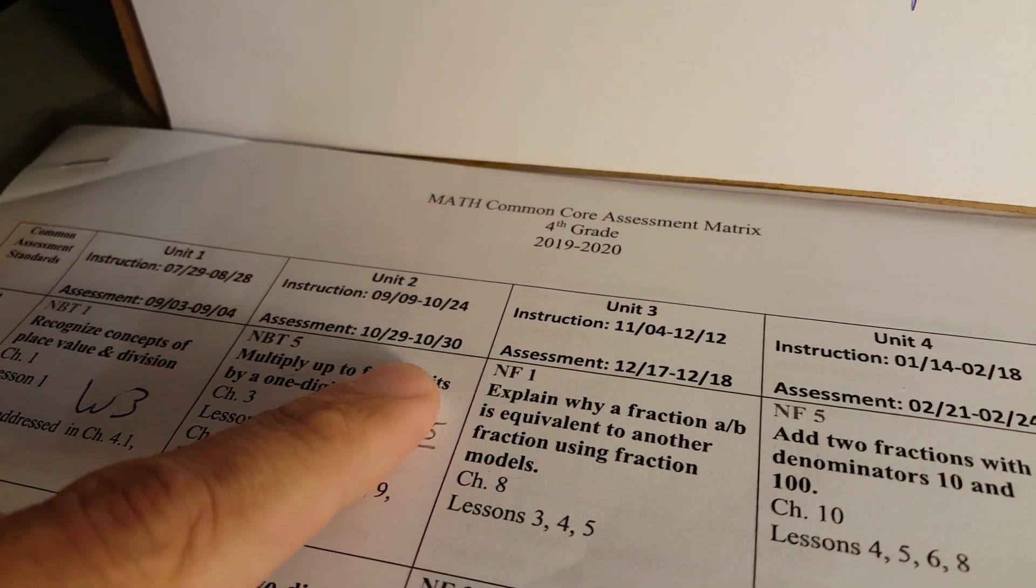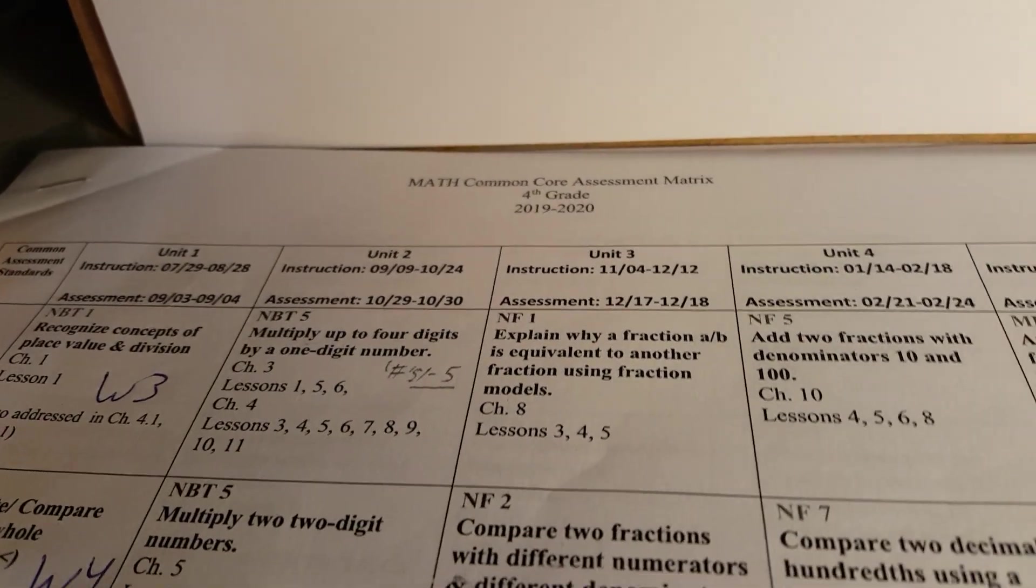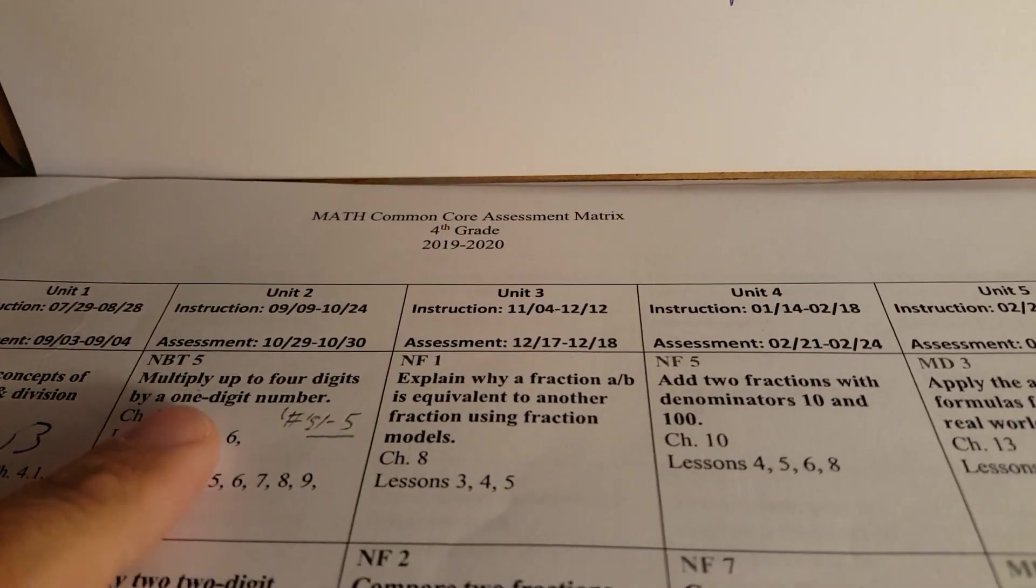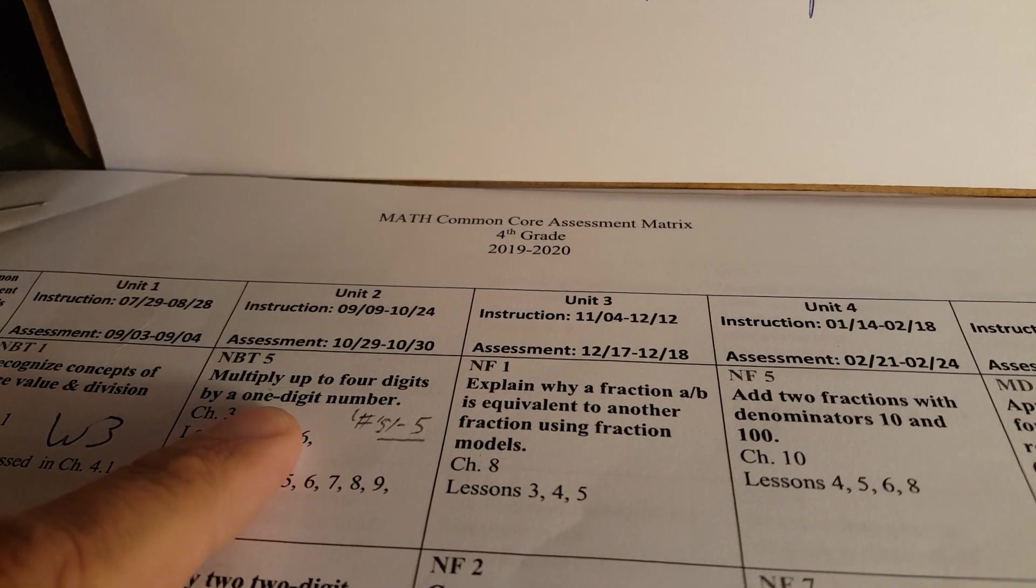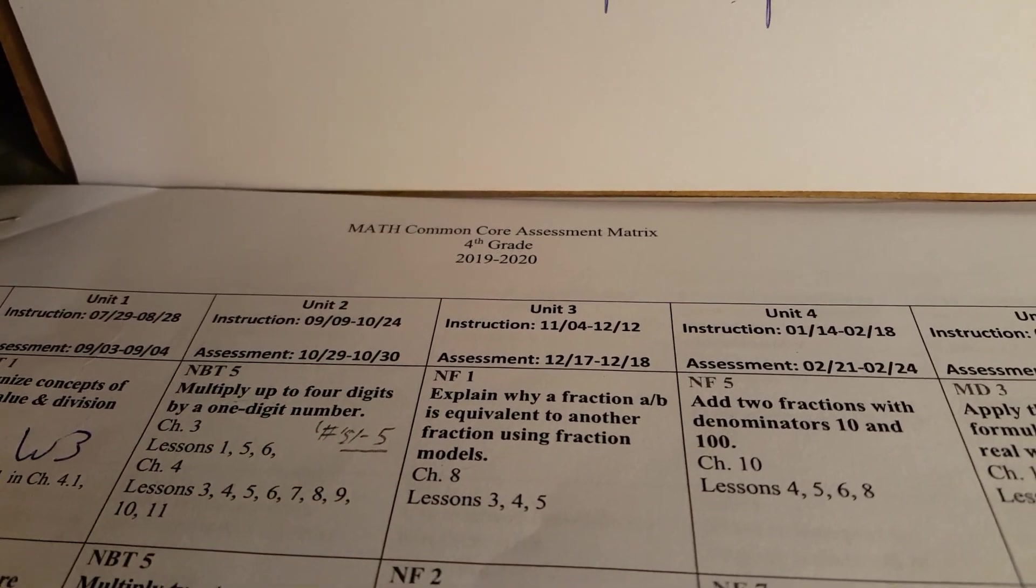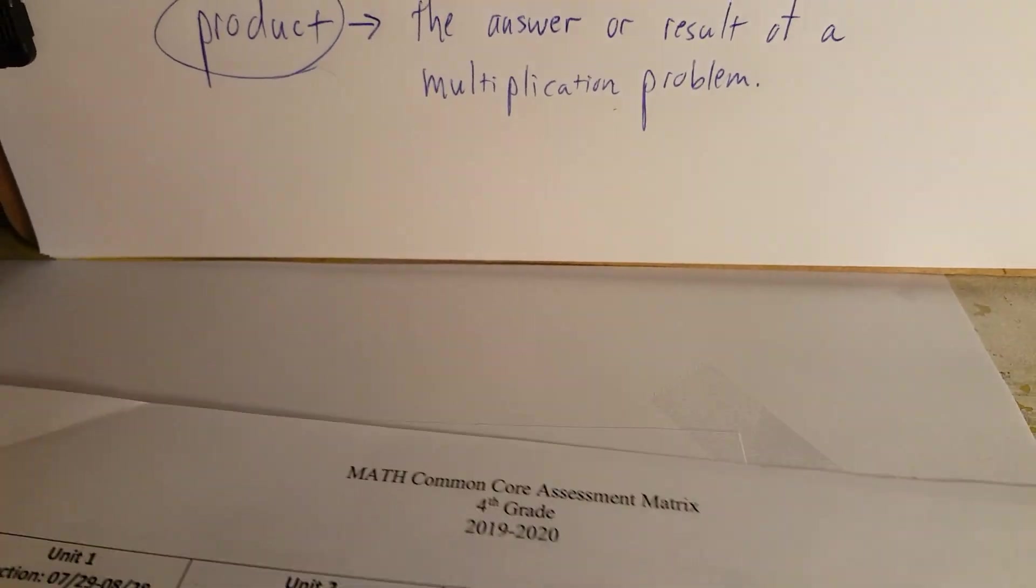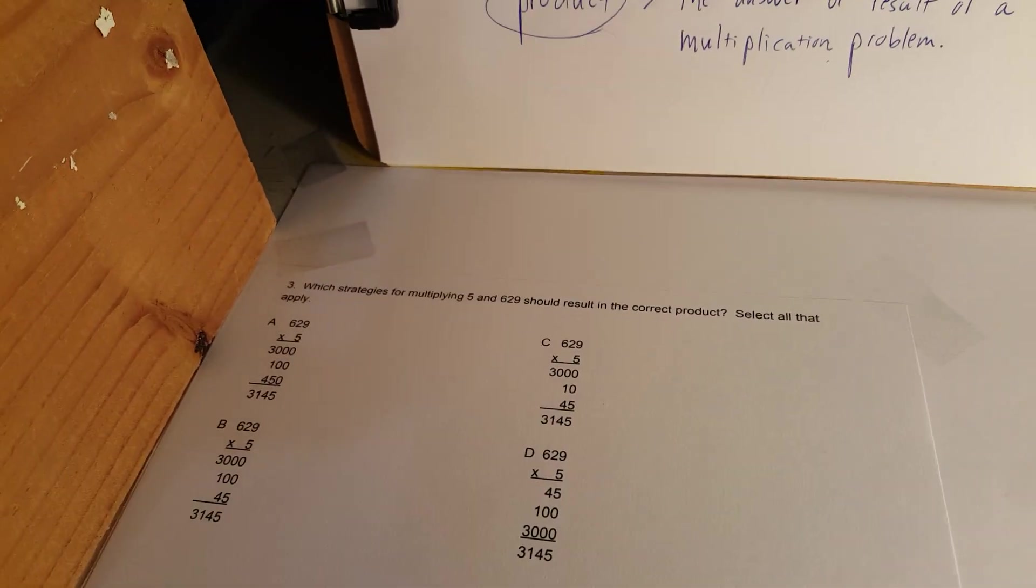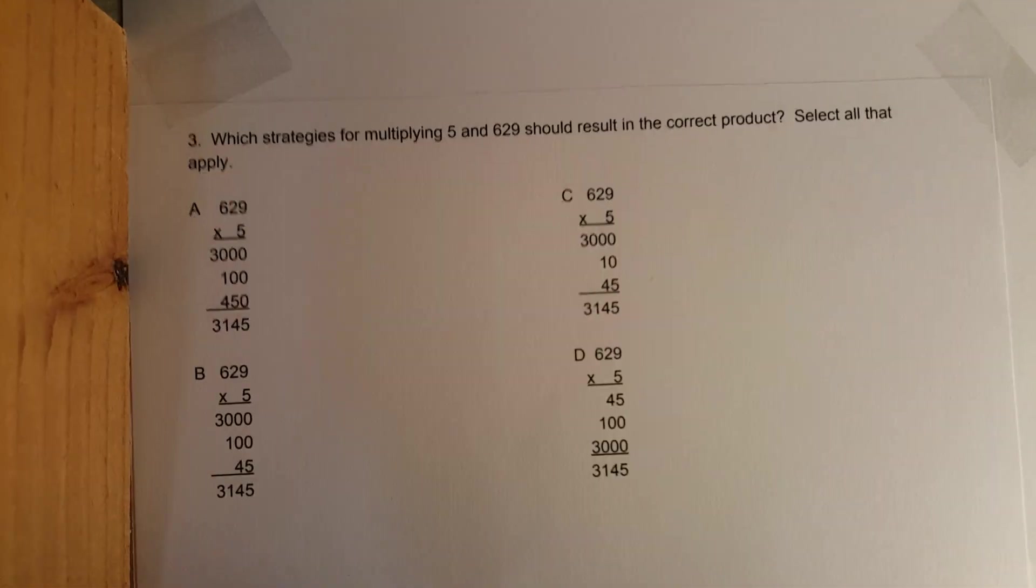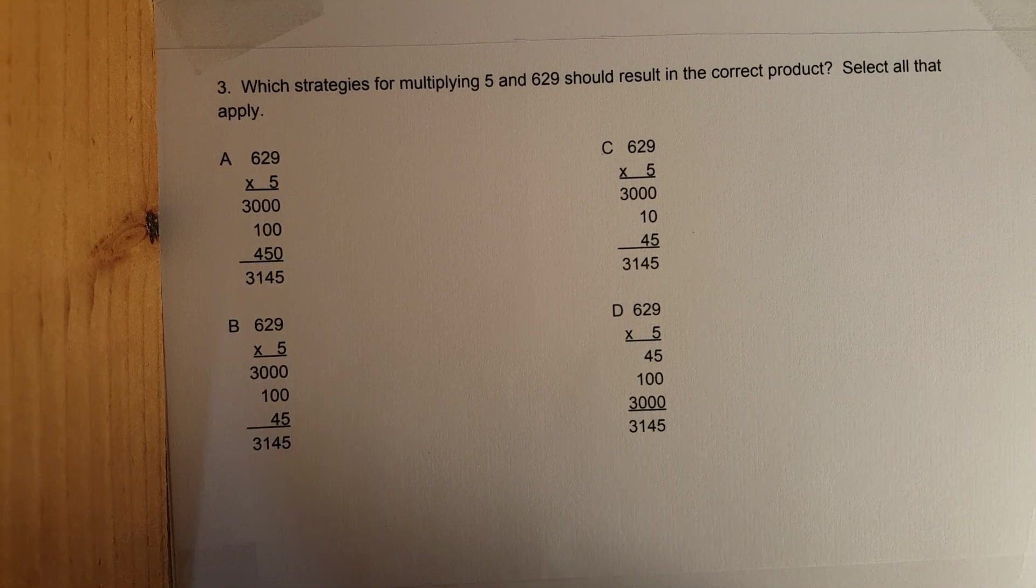The date is 10/29 to 10/30. Remember these dates will change from year to year but the standard will stay the same, and there it is: NBT.5 - multiply up to four digits by a one digit number. We're going to set it up and go through all the different strategies.